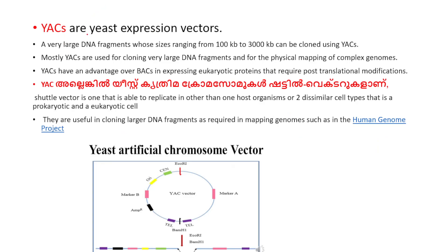These are yeast artificial chromosomes, also called yeast expression vectors. These can carry large DNA fragments from 100 to 3000 kilobases. This is a shuttle vector — it can be replicated in both prokaryotic and eukaryotic cells. Shuttle vectors are useful in cloning large DNA fragments and are used as yeast artificial chromosomes.